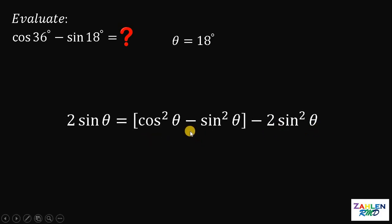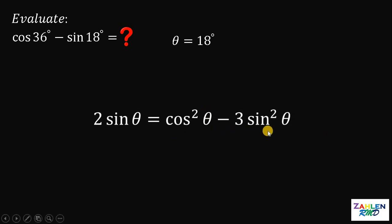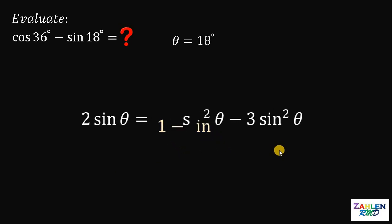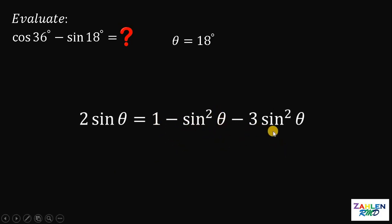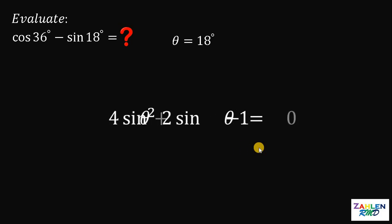Dividing all terms by cosine theta, we get: 2 sine theta equals cosine squared theta minus sine squared theta minus 2 sine squared theta. Combining like terms, negative sine squared theta and negative 2 sine squared theta give us negative 3 sine squared theta. So the right-hand side is cosine squared theta minus 3 sine squared theta. Let's rewrite all terms in terms of sine using the Pythagorean identity.